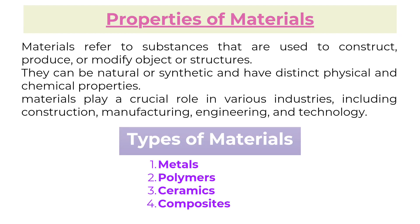Properties of materials. Materials refer to substances that are used to construct, produce, or modify objects or structures. They can be natural or synthetic and have distinct physical and chemical properties. Materials play a crucial role in various industries, including construction, manufacturing, engineering, and technology.